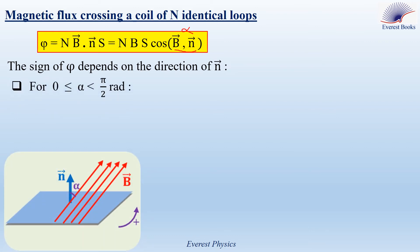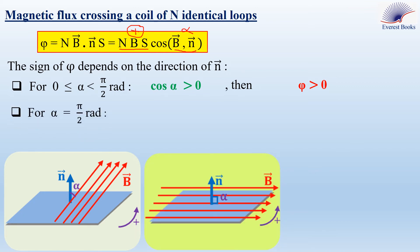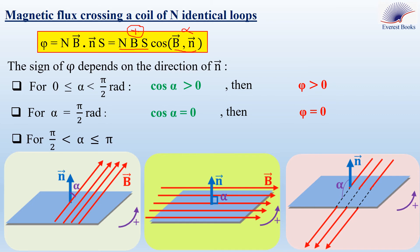Let's study three cases. First case: if alpha is between 0 and pi over 2, cosine alpha is positive, so the flux is positive. Second case: if alpha equals pi over 2, meaning B is parallel to the surface, cosine of pi over 2 equals zero, so the flux crossing the loop is zero. Third case: if alpha is between pi over 2 and pi, cosine alpha is negative, so N times B times S is positive but cosine alpha is negative, giving a negative flux value.